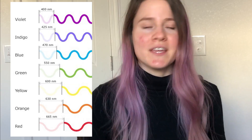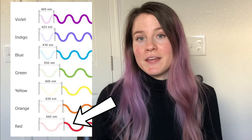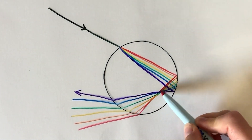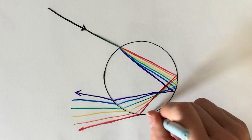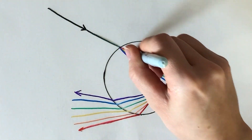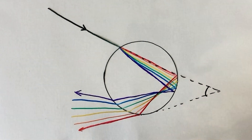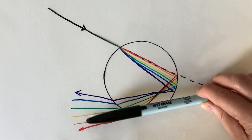Red, being the longest wavelength, makes a path that looks like this, causing it to come out of the sphere at a slightly different angle. This is how a transparent object like a prism or a sphere can separate light into its different colors — and it's called dispersion.